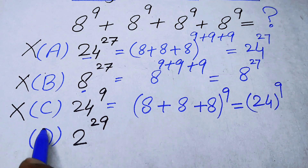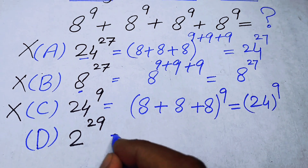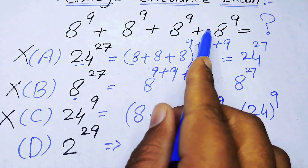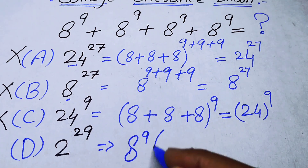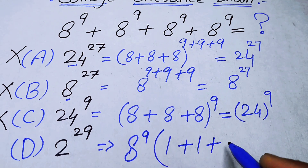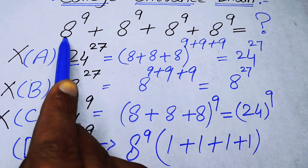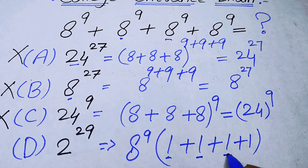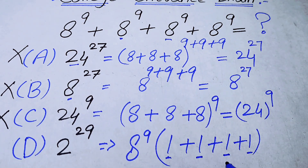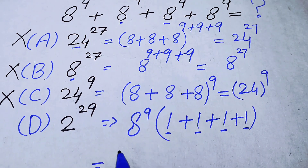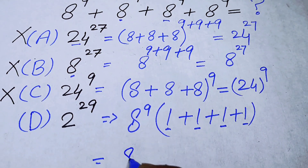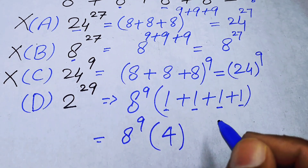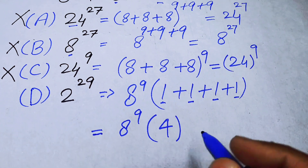Now we check option D: 2 to the power of 29, which is probably our correct answer. We take 8 to the power of 9 as a common factor from each term, giving 8 to the power of 9 times (1 plus 1 plus 1 plus 1), which equals 8 to the power of 9 times 4.